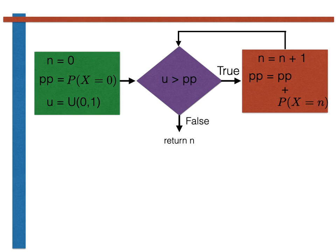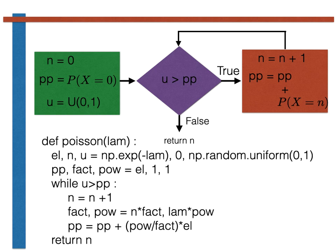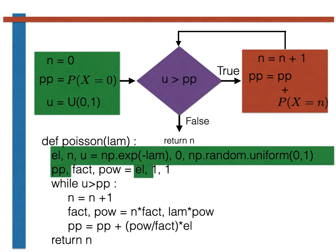The insight that we have arrived at in the flowchart from the previous slide is converted to Python code as shown below. Those parts of the code that are highlighted in green complete the actions that are described in the green box. As you can see, these lines set the n, u and pp variables as is described in the flowchart. Three additional variables are set here as well.